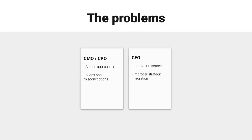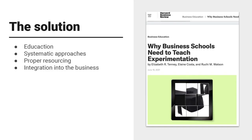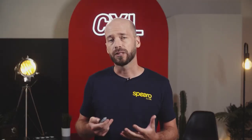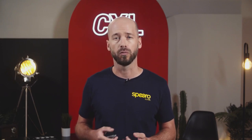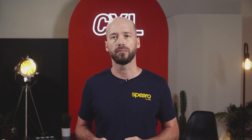Considering these two strategic narratives, the problems are: from the practitioner standpoint, ad hoc approaches, myths and misconceptions about experimentation programs; from the CEO perspective, improper resourcing and improper strategic integration. The solution — grouped the same for either — is education, systematic approaches, proper resourcing, and correct integration into the business. It's not a channel, not a silo; it needs to be properly integrated. Harvard Business Review just came out with an article on why business schools need to start teaching experimentation, justified by how experimentation enables more efficient decision making and better resourcing.